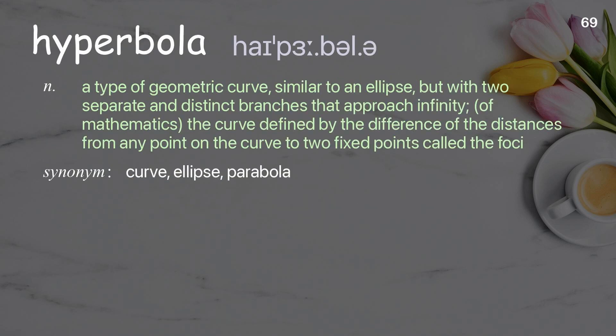Hyperbola: A type of geometric curve, similar to an ellipse, but with two separate and distinct branches that approach infinity; in mathematics, the curve defined by the difference of the distances from any point on the curve to two fixed points, called the foci.